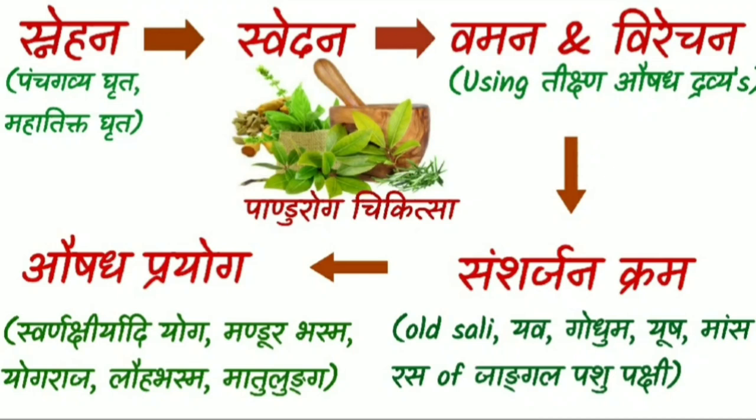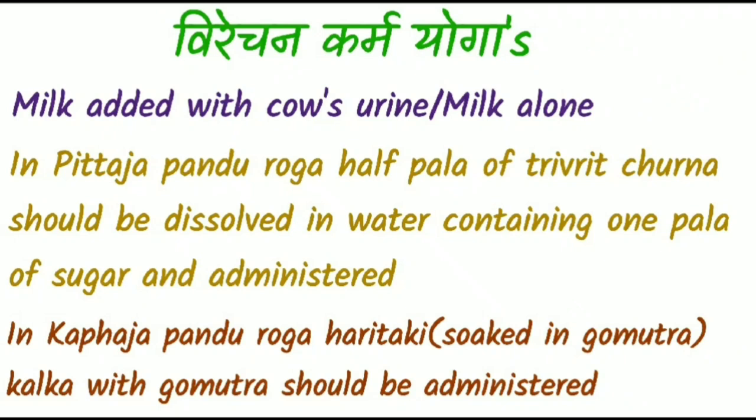The complete Panduruga Chikitsa is given in this one picture with only five steps to remember. For Virechana Karma, some important Virechana Yogas are given. We can administer milk added with cow's urine. In Pittaja Panduruga, half pala of Trivrita Churna should be dissolved in water containing one pala of sugar and administered. In Kaphaja Panduruga, Haritaki soaked in Gomutra and made into Kalka form is administered with Gomutra as Anupana.